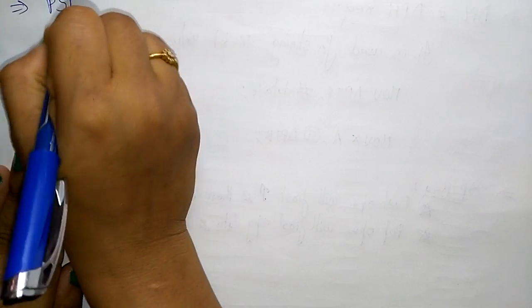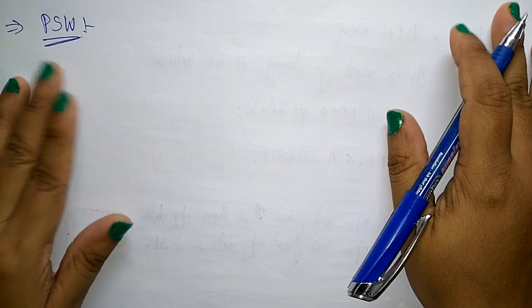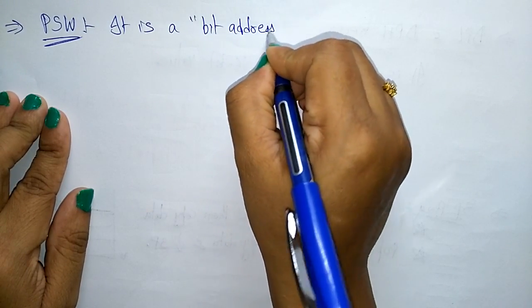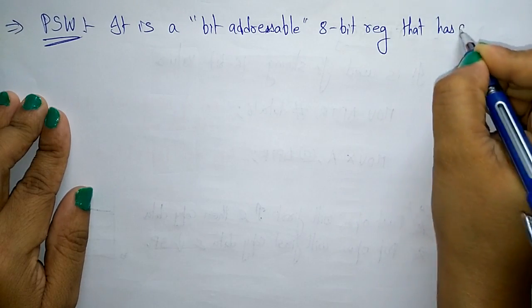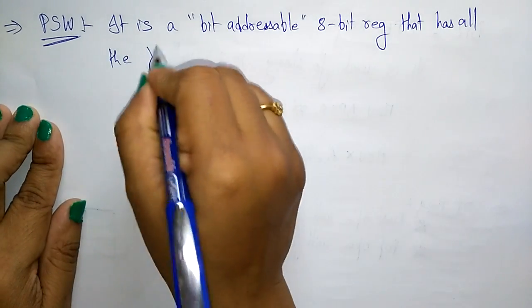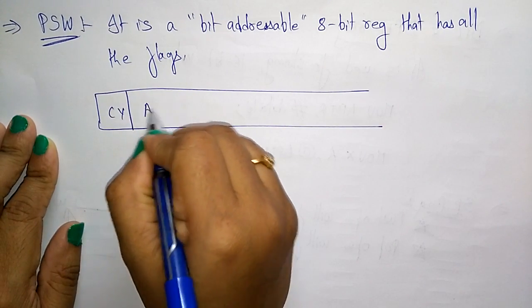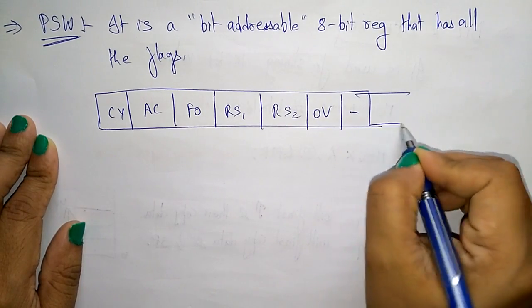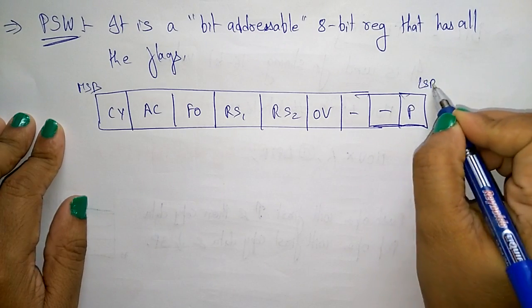The next special function register is the program status word (PSW) register. It is a bit-addressable 8-bit register that contains all the flags: carry flag, auxiliary carry flag, flag 0, RS1, RS2, overflow flag, a reserved bit, and the parity flag (P).